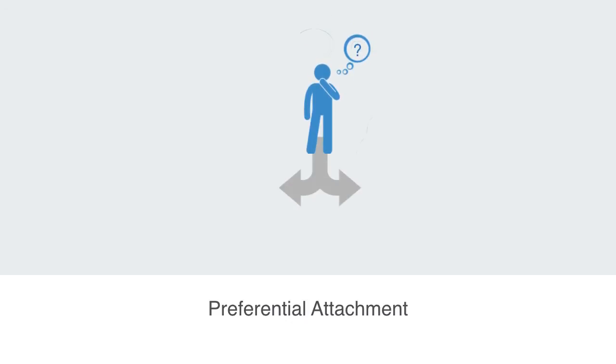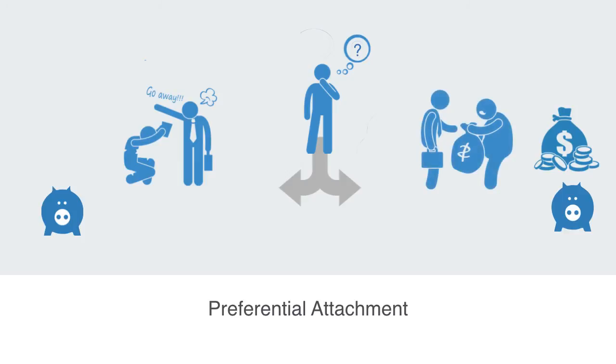The power law distribution to a network like the World Wide Web is often explained with reference to what is called preferential attachment. Preferential attachment describes how a resource is distributed amongst a number of nodes according to how much they already have, so that those who already have a lot receive much more than those who have little. In more familiar terms, this is called the rich get richer.